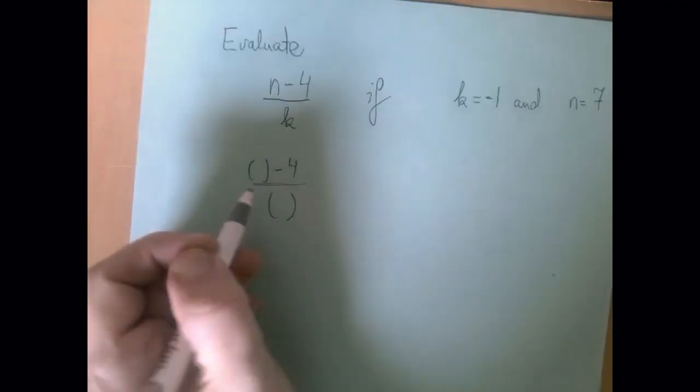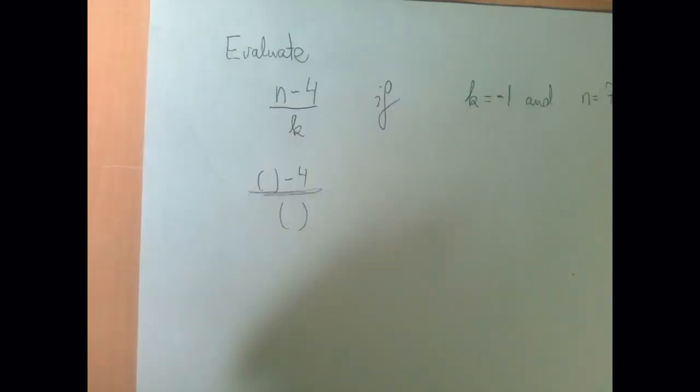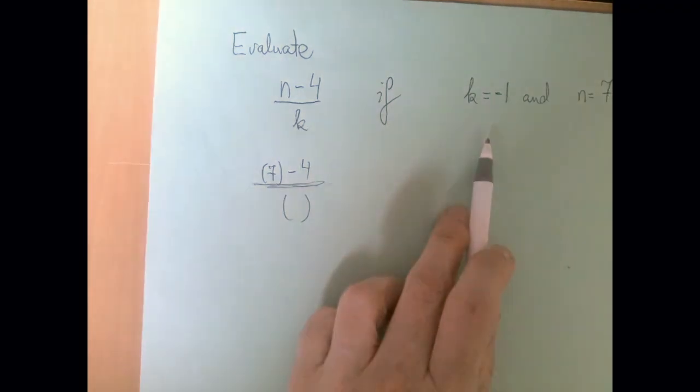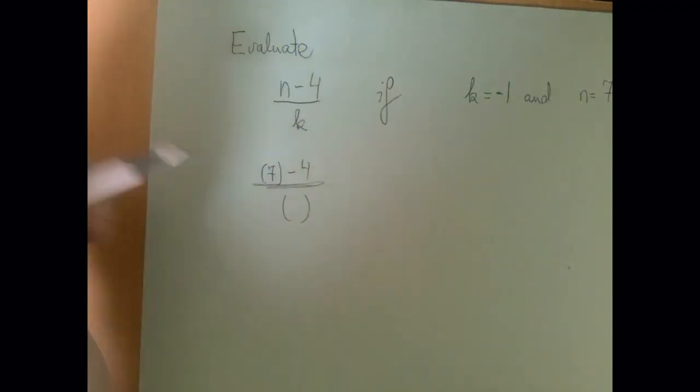The second step is to copy the value of the variables inside the parentheses, so first n, that's 7, and then k in the divisor is negative 1.